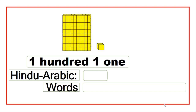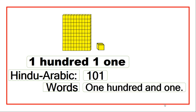Now, in this case, I have one block of one hundred and one block of one. So in Hindu Arabic, we write this as one, zero, one. In words, it is one hundred and one.